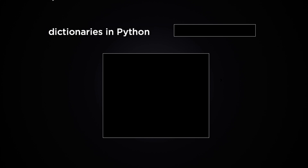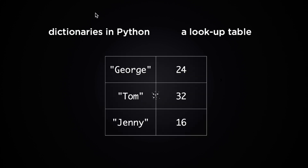In this video, I'm going to show you how to use dictionaries in Python. You can think of a dictionary in Python as sort of like a lookup table. Just as an example, let's say you have this table of information — George is 24 years old, Tom is 32 years old, and Jenny is 16. In general, there's the value 24 with the key George, and the value associated with the key Tom is 32.